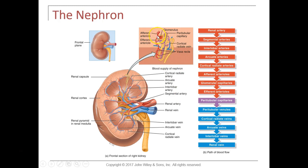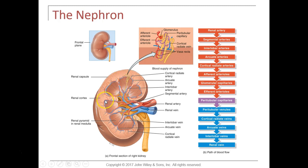The peritubular capillaries and the vasa recta — which is in the medulla — receive blood leaving the efferent arteriole. Blood then drains back into the cortical radiate vein, down to the arcuate vein, then down through the interlobar vein between the pyramids, into a segmental vein, out of the kidney via the renal vein, and then into the inferior vena cava.